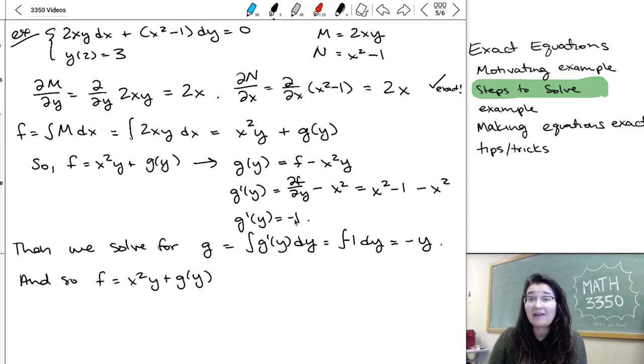Now, I said f was x squared y plus g, so I know that it's actually x squared y minus y. I just want you to know, a lot of the time, that's the thing that's your answer in WebWork. They'll already have the setting of equal to a constant, and that's the thing that you put in the box.